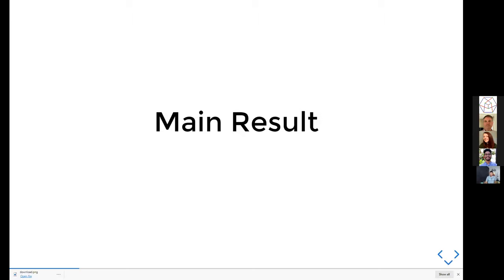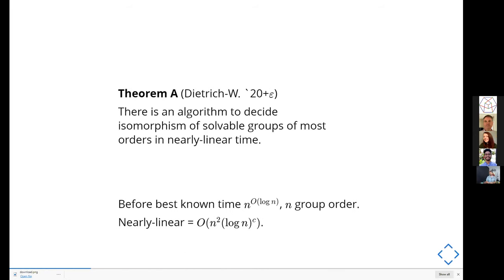The main result in the simplest form: given a group written down as its multiplication table, there is an algorithm that decides if the group is solvable, and if given a pair of groups, decides if they are isomorphic in nearly linear time. What Heiko Dietrich and I are working on is this narrow question: compare two groups, determine if they're both solvable, and if so, whether they're isomorphic.